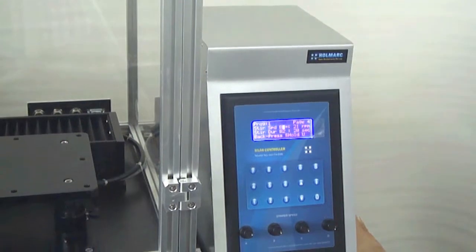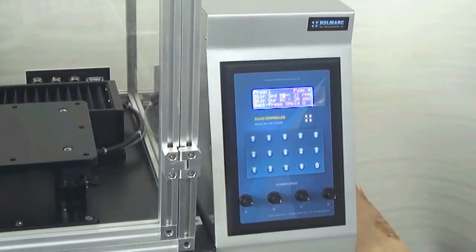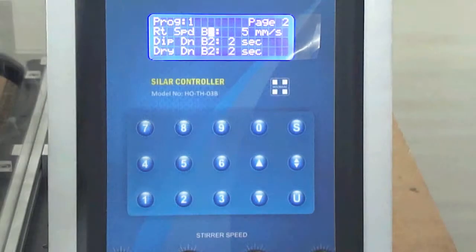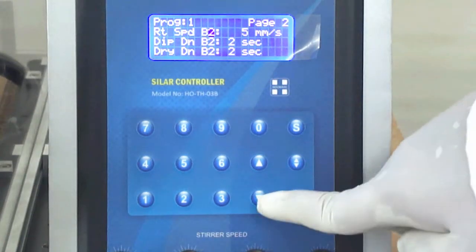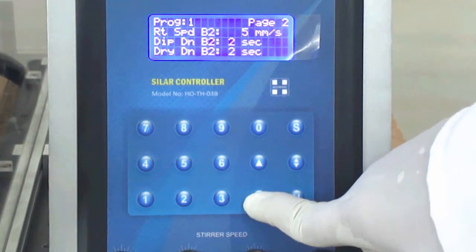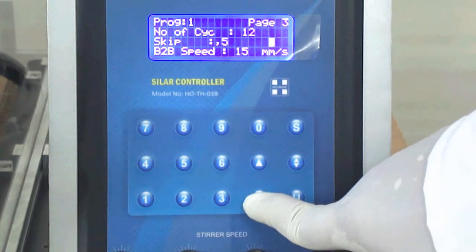The unit provides a user-friendly front panel with keyboard and LCD display to enter all process parameters such as dip speed, dip duration, length of travel, number of dips, etc.